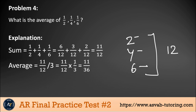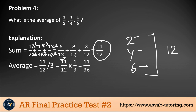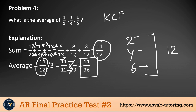Adding those gives you 11/12. Now divide by 3. Remember K, C, F — keep, change, flip — keep whatever is on the left side, change the division sign to multiplication, and then flip the 3 (write it as 1/3). Multiply top to top and bottom to bottom. That gives you 11/36. So that is the correct answer.